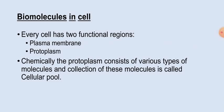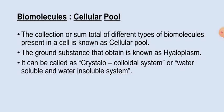Chemically, the protoplasm consists of various types of molecules, and the collection of all these molecules is called the cellular pool. So, what is the cellular pool? The collection and sum total of different types of biomolecules present in a cell is known as the cellular pool.